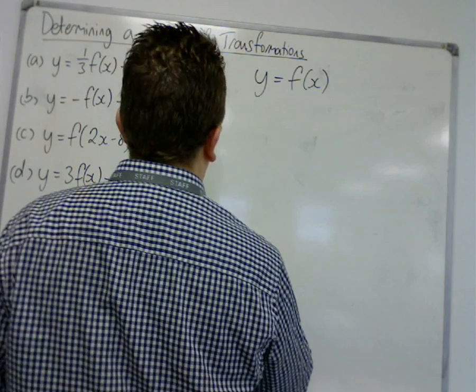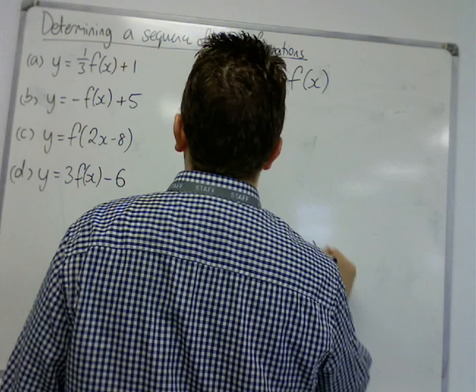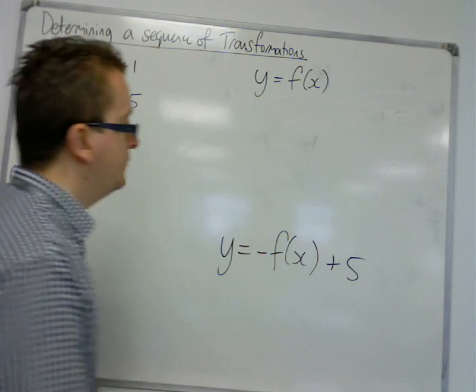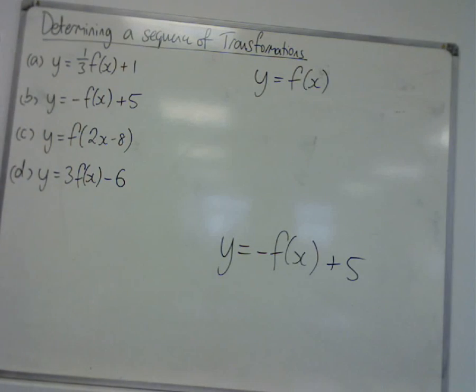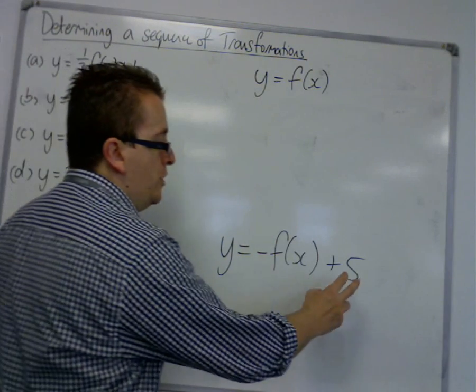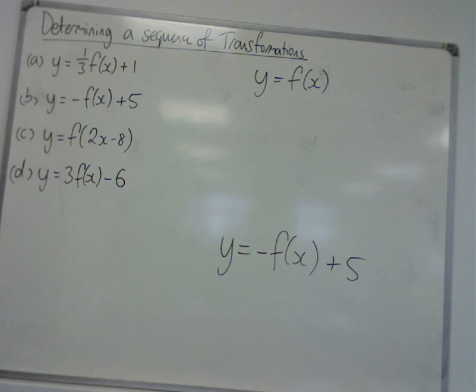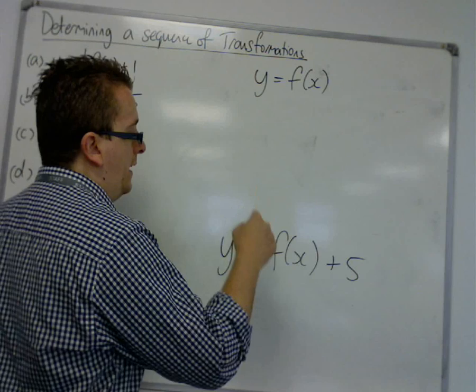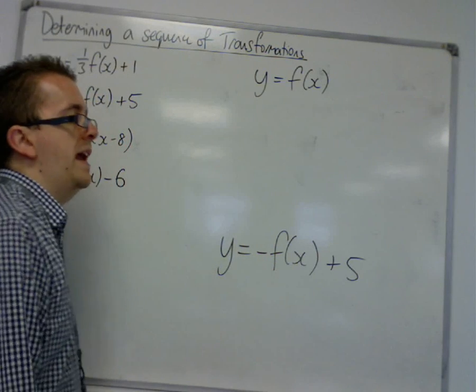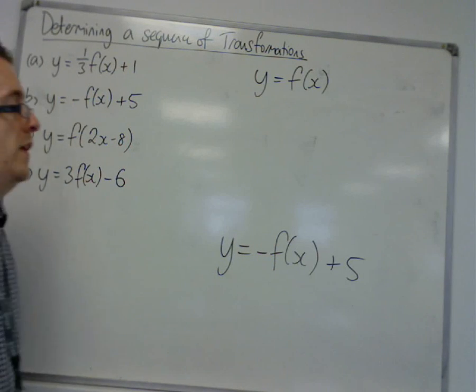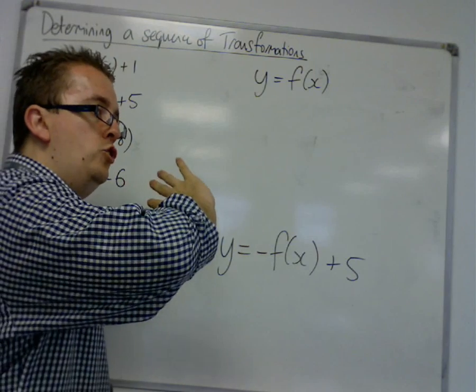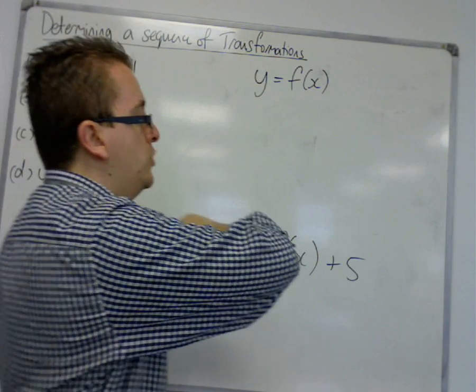We're trying to derive y is equal to minus f of x plus 5. So, we identify first what transformations could have taken place. There's a translation by vector 0, 5, because of that plus 5 at the outside. And the minus in front of the f would mean that the y's are changing sign. So, it's a reflection in the x-axis.